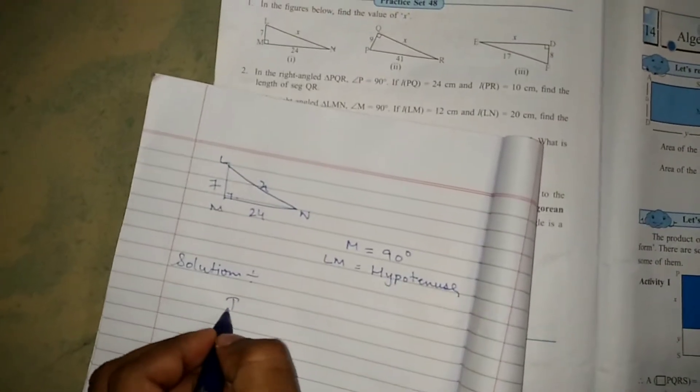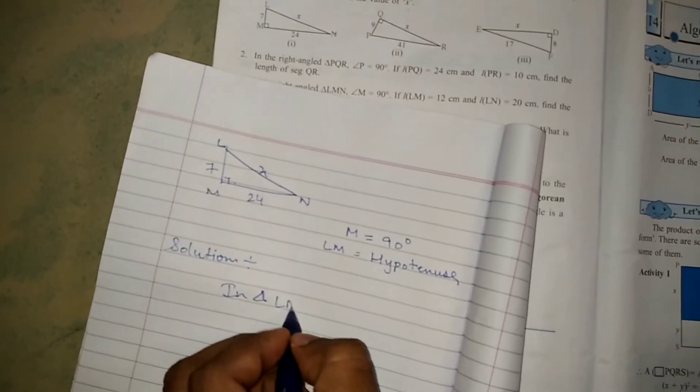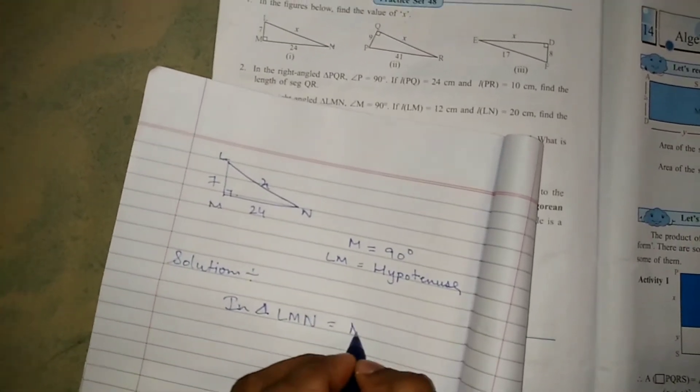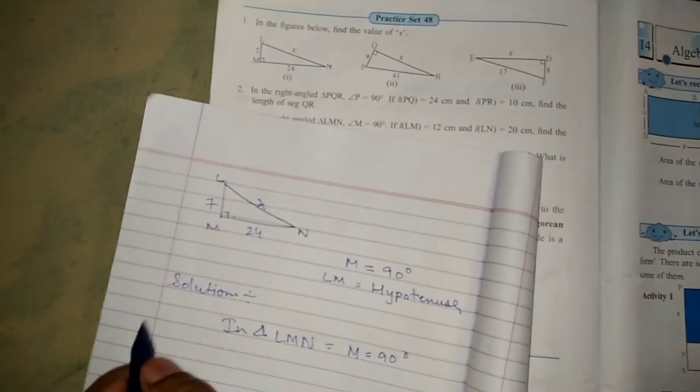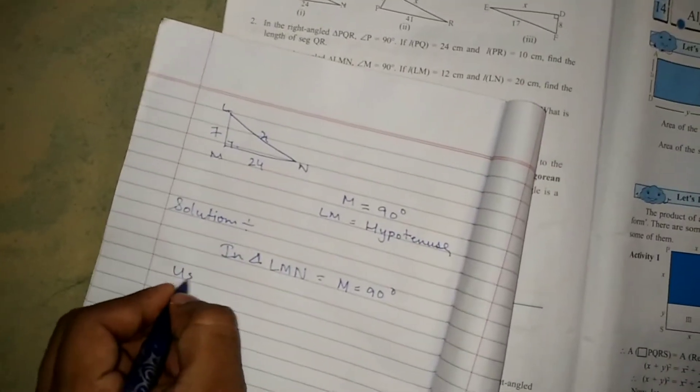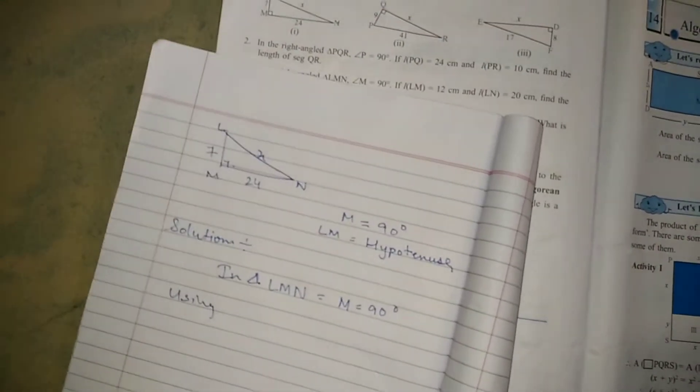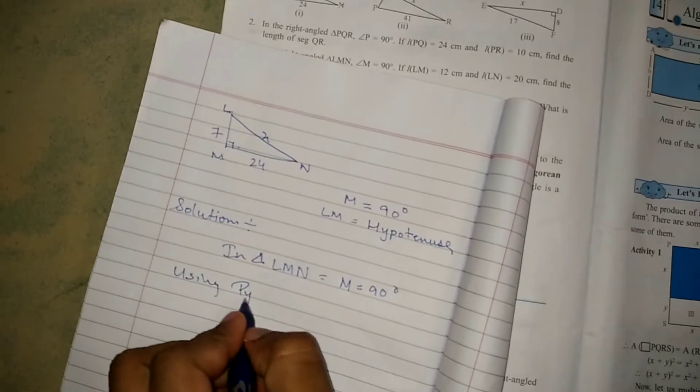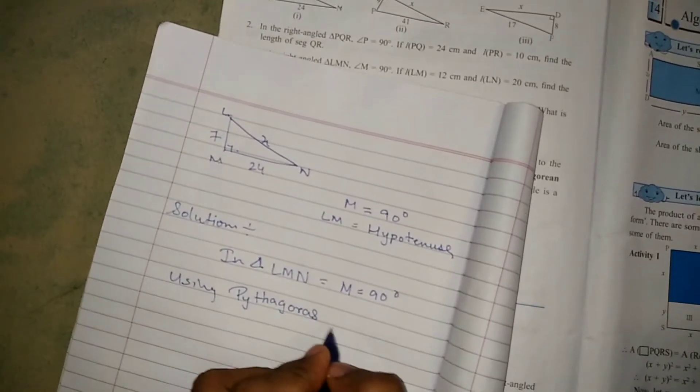In angle LMN, M is the 90 degree. I show you here. You have to use Pythagoras Theorem.